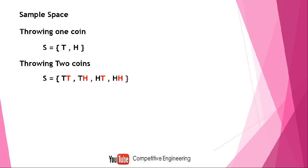I highlighted the second letter in red, which shows we can get the two-coin sample space from the one-coin sample space. We write the one-coin sample space two times, then put T on the right side of the first two elements and H on the right side of the other two. Now I'm going to find the sample space for throwing three coins.